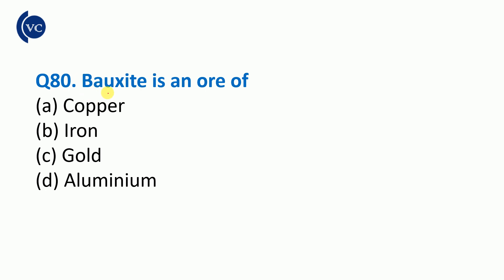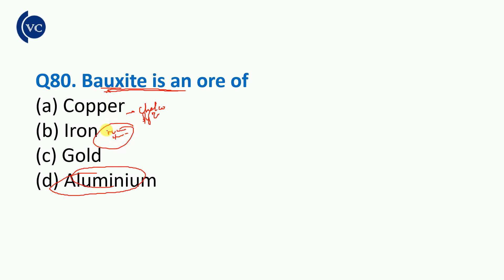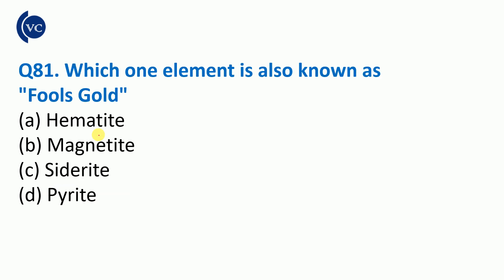Bauxite is an ore of aluminium — bauxite is the ore of aluminium. The ore of copper is chalcopyrite. The ore of iron is magnetite or hematite.